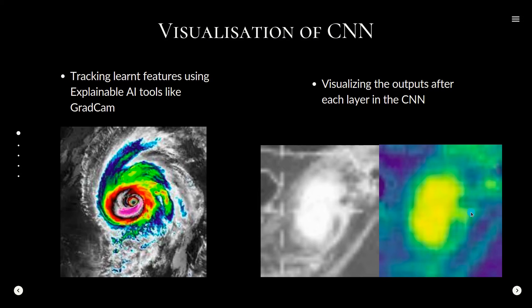While building solutions for sensitive topics where inaccuracies can have severe repercussions, we cannot blindly trust new network models as black boxes. With practices like explainable AI, we can look inside these black boxes. We plan on tracking the features being learned by our convolutional network by visualizing the outputs from each layer. Using tools like Grad-CAM, we can identify which specific areas of the images are being used by the classification model to identify different classes.